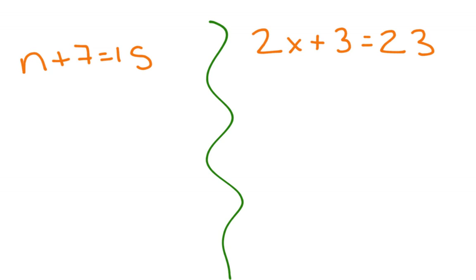So this first one, n plus 7 equals 15, we can call a one-step equation because you see that there's one type of math there. It just has addition. So in order to figure out the value of n, it would only require one step of work. We want to undo what's there by using the inverse operation.